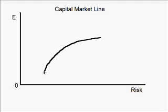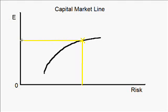Last time we already discussed the concept of the efficient frontier. Every point on this efficient frontier represents a particular portfolio constructed from the equities available in the market, and each point represents the maximum possible expected return for a given risk. When we constructed the efficient frontier, we only took risky equities into account. If we introduce a risk-free asset into the market, we will be able to construct a straight line, and this straight line is the capital market line.